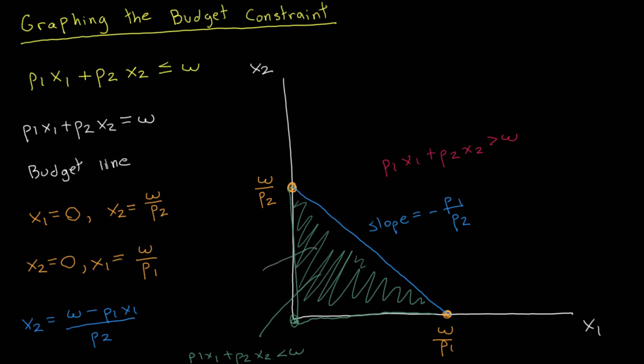So the budget set is this triangle and everything on the inside. That is the budget set, and this illustrates the budget constraint — the consumer can only afford and must choose a bundle within their budget set. That concludes this introduction on the budget constraint. In the next video, I will focus on a few changes to the budget constraint: specifically, what happens when there is a change in the price of a good or a change in the income level. Stay tuned for that one.